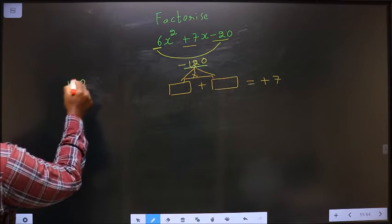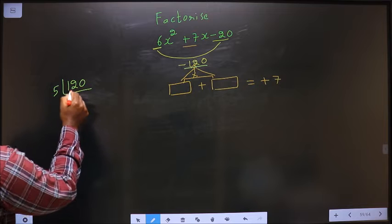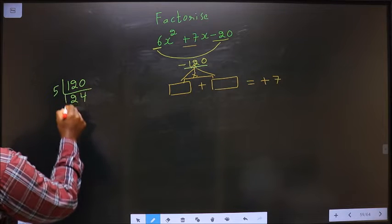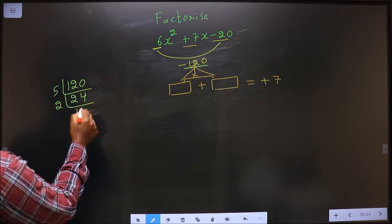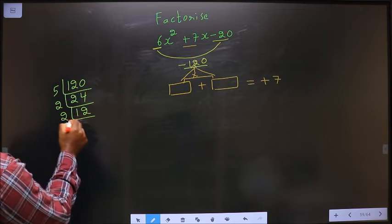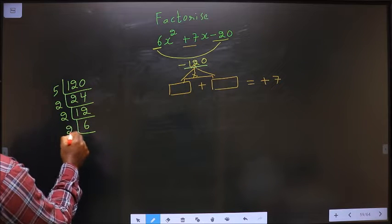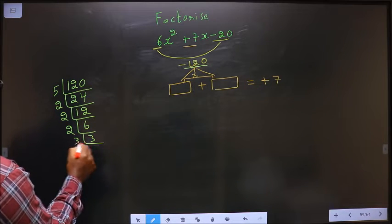120. Starting with 5: 5, 24. Next 2: 2, 12. Next 2, 6. Next 2, 3. 3, 1.